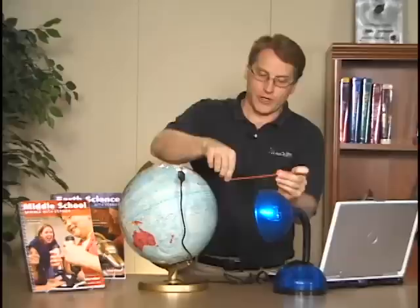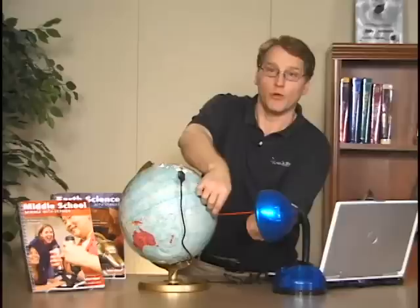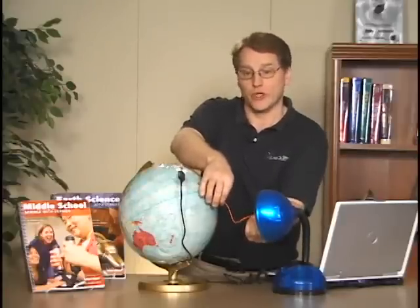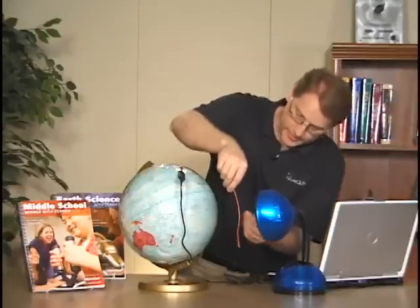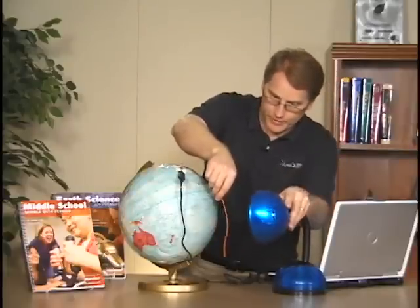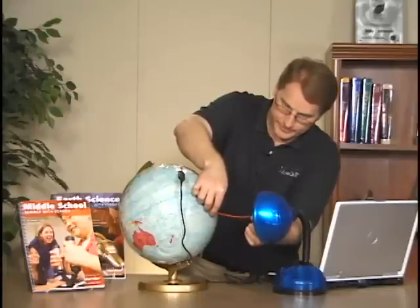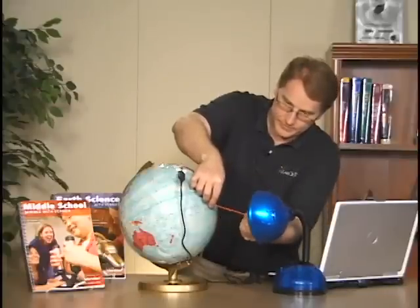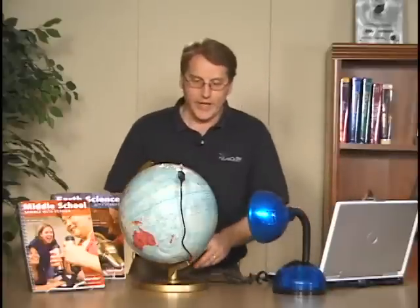The lab calls for a 20-centimeter length of string so we can measure the distance from the globe to the light bulb and keep it the same for both winter and summer positions. I need to line this up with the Tropic of Capricorn. That'll take just a second. Okay, that looks good.